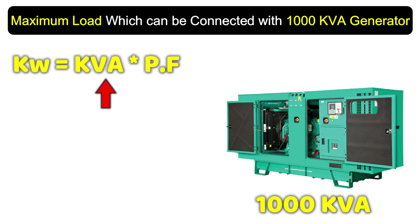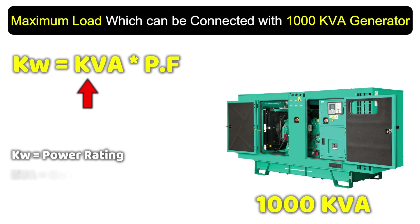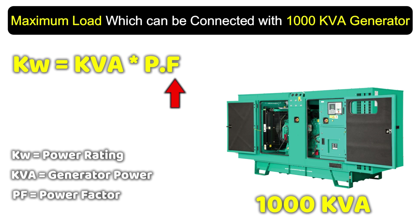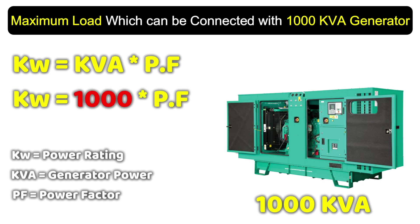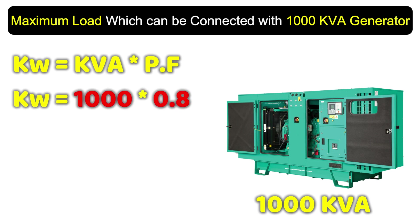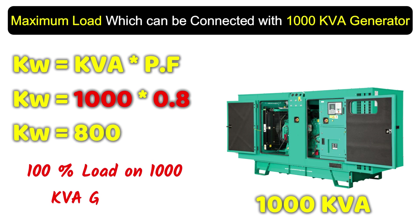To find the answer, we simply use this formula: multiply the kilovolt-ampere value by the power factor. We have a 1000 kVA generator, so we write 1000. If you know the power factor, write it; if not, simply use 0.8. Multiplying 1000 by 0.8 gives us 800.